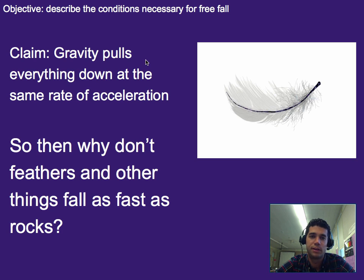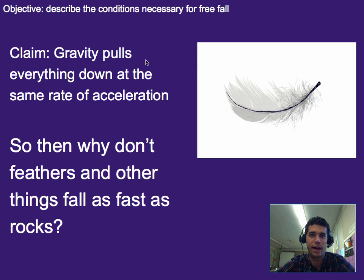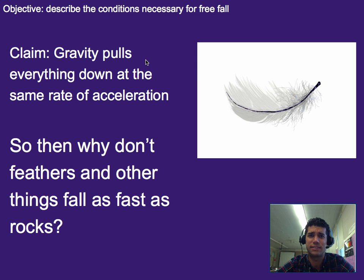We're going to start off with a claim: gravity pulls everything down at the same rate. You've probably heard this before. Technically, gravity pulls everything down at the same rate of acceleration, but there's a problem with that — if I drop a rock and drop a feather, gravity clearly is pulling down the rock faster than the feather, because the feather hits the ground much later. So the question becomes, why don't they hit the ground at the same time if gravity pulls everything down at the same rate, as so many science teachers are prone to say?